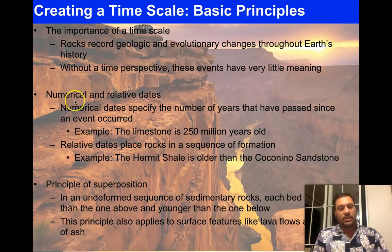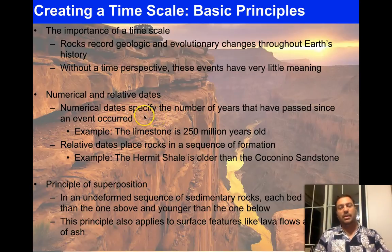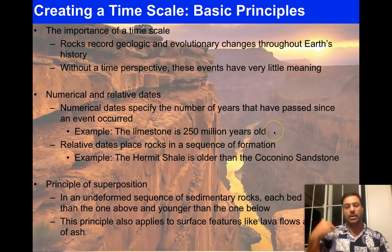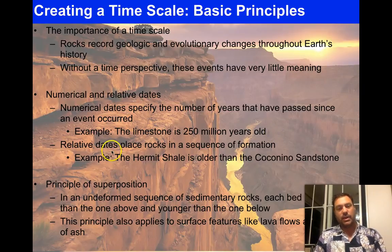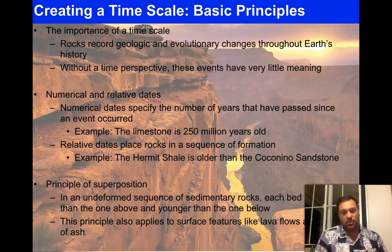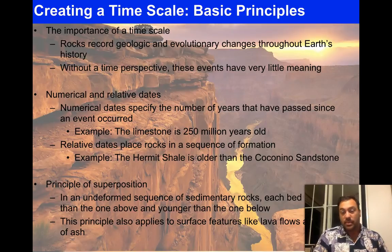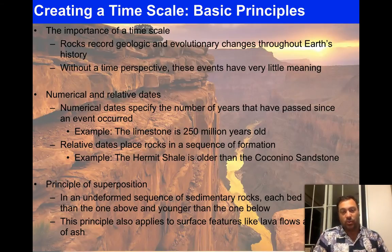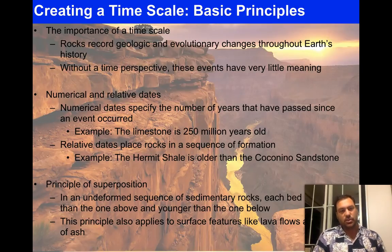There are two ways to state dates: numerical and relative. Numerical dates specify the number of years that have passed since an event — for example, 'the limestone is 250 million years old.' Relative dates place rocks in a sequence of formation — for example, 'the Hermit Shale is older than the Coconino Sandstone.' It's like saying someone is 20 years old versus simply calling them your older brother. One gives you an actual number; the other only tells you the order.